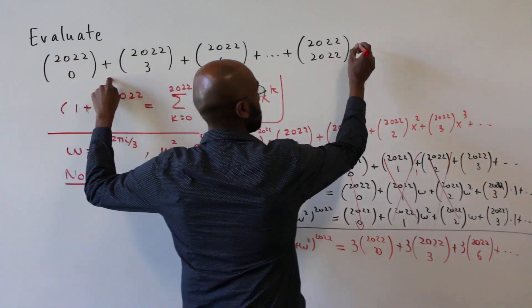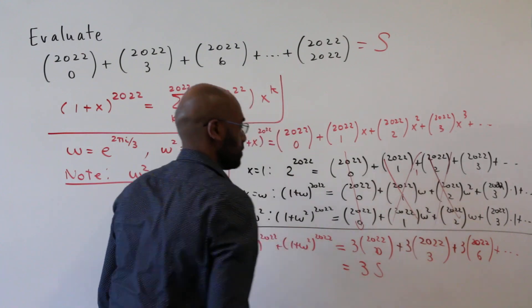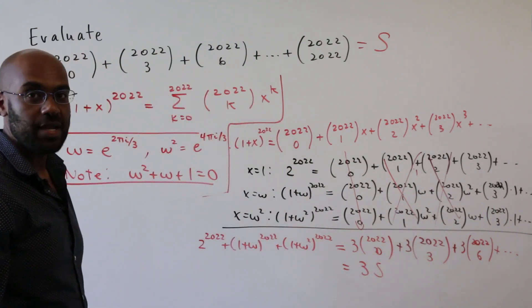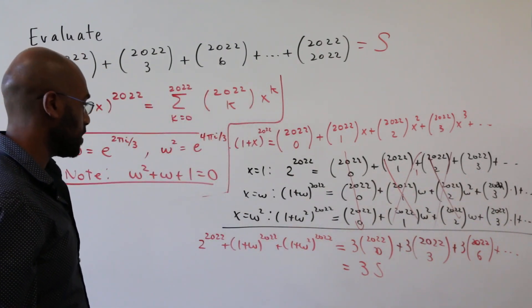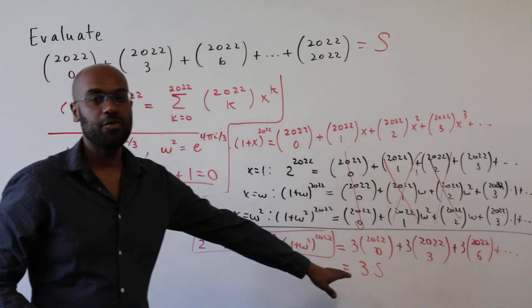That looks a lot like the sum that we're interested in over here. If we call this sum S, this expression on the right is three times S. So now we have an actual explicit formula for what S is. S is this entire thing right over here divided by three.